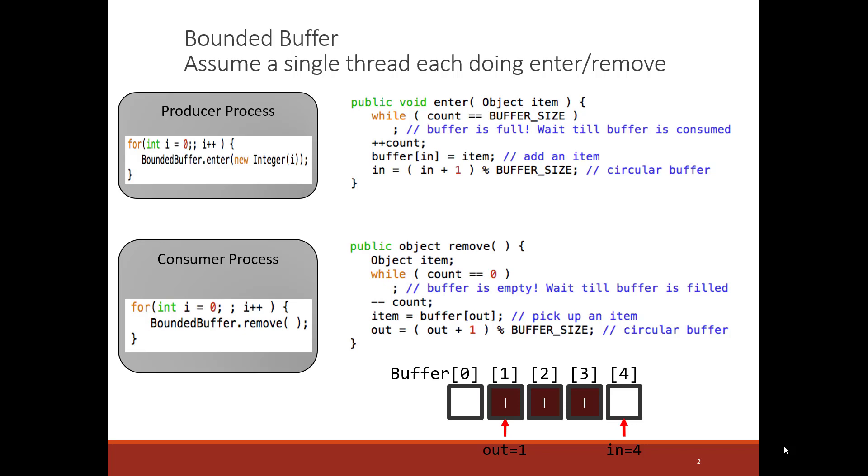The count maintains the count of the number of items in the buffer. If the count gets to be the size of the buffer, then it loops until there's a space for one of the objects to be added. Correspondingly on the remove, notice that when the count is zero, there's nothing to remove from the buffer, and so we loop until something gets put into the buffer.